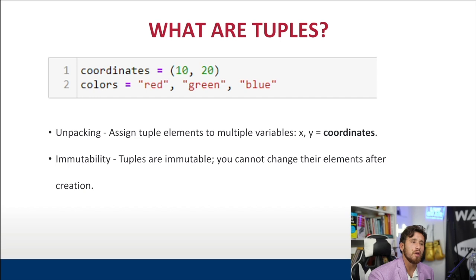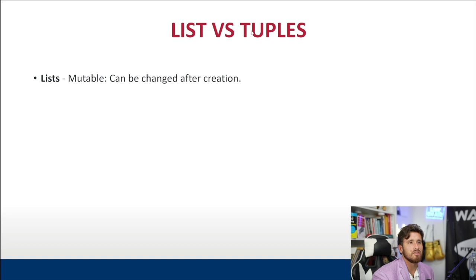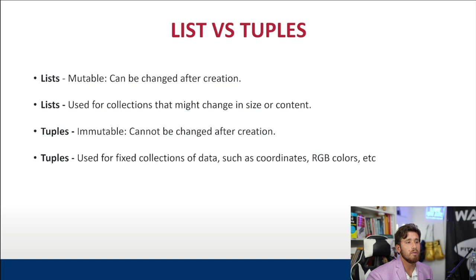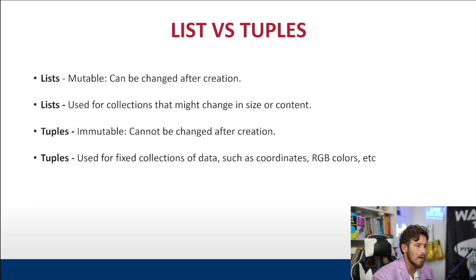Let's highlight the key differences between lists and tuples. Lists are mutable — you can append, add, or change elements. Tuples are immutable. Lists can be used for collections that might change in size or content; for example, a list of names you need to update. Tuples are fixed collections of data — once declared, they cannot be changed. Good examples for tuples include coordinates, RGB colors, and similar fixed data.